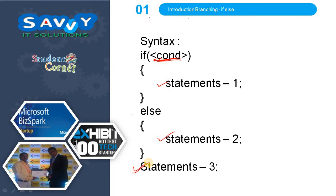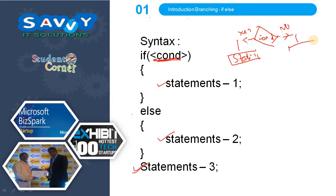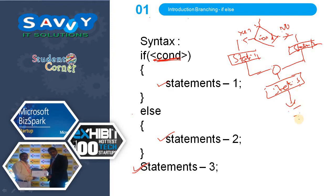The flowchart indicates: a condition is checked — if yes, statements 1 are executed; if no, statements 2 are executed — followed by statements 3 and so on. This is the way we indicate the flow of control in an if-else statement.